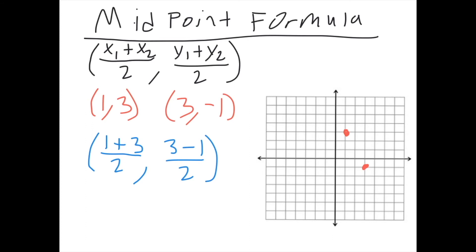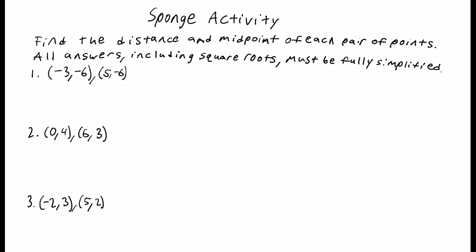So now we take the average of each of those. 1 plus 3 is 2. 2 divided by... 1 plus 3 is 4. 4 divided by 2 is 2. And 3 minus 1 is 2. 2 divided by 2 is 1. So our midpoint is the point 2, 1. And it's this point right here. So that point is directly between our two points, halfway in between.